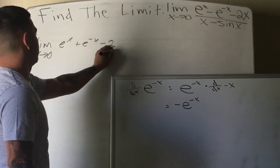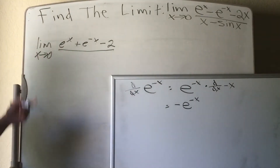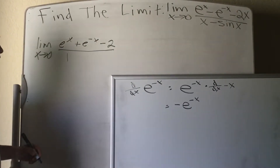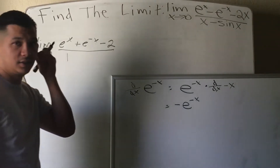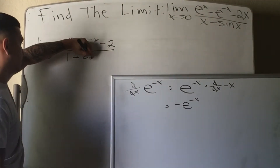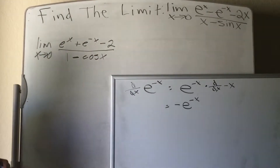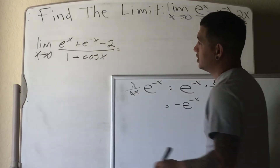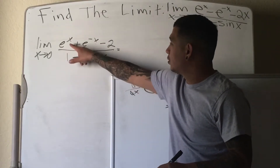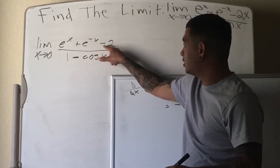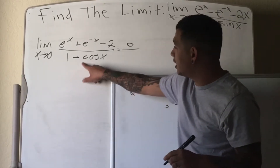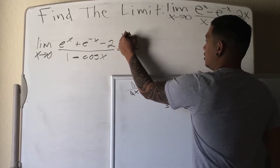Then we take the derivative of the bottom. The derivative of x is just 1. The derivative of sine x is cosine x, so you leave the negative sign there, and this becomes negative cosine x. Then we plug in 0. When you plug in 0, e to the 0 is 1, so 1 plus 1 is 2, minus 2 gives 0 on top. On the denominator, cosine of 0 is 1, so 1 minus 1 is 0. So we're going to apply L'Hôpital's Rule again.